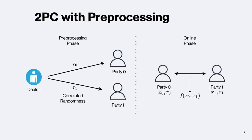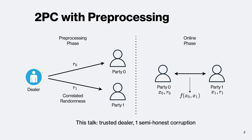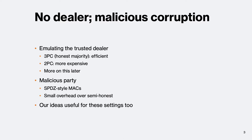We will be working in the two-party computation with pre-processing model, which has two phases. In the first phase, a dealer distributes correlated randomness to the two main parties, which then use this correlated randomness along with their secret inputs in an online phase to compute a joint function on their inputs. For most of this talk we assume a trusted dealer with at most one semi-honest corrupted party. For a more realistic setting, one typically emulates the dealer using either a 3PC protocol, which is quite efficient, or a 2PC protocol, which can be much more expensive. To handle malicious parties we can use a SPDZ-style MAC approach, which incurs very small overhead over semi-honest, and all ideas discussed today are applicable to these settings as well.